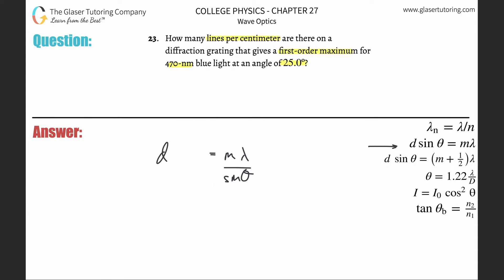I'm going to solve this for d by simply dividing out the sine of theta. Now all we have to do is plug it in: the first-order max m is 1, the wavelength they told us is 470 but we need that in meters, and then divide that by the sine of the angle, which is 25 degrees.